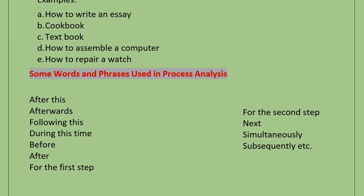Some words and phrases often used in Process Analysis are: after this, afterwards, following this, during this time, before, after, for the first step, for the second step, next, simultaneously, subsequently, etc. As we are dealing with the step-by-step process, these terms are very apt for it, because when we explain the step-by-step development of something, we often use these words.